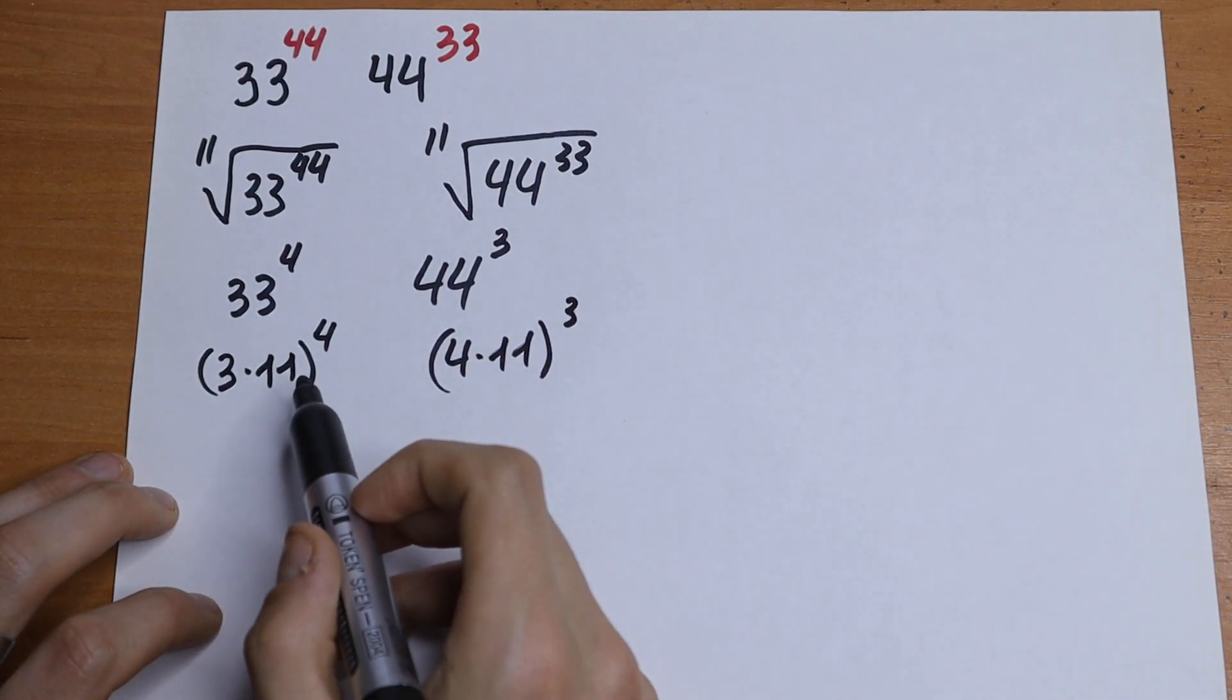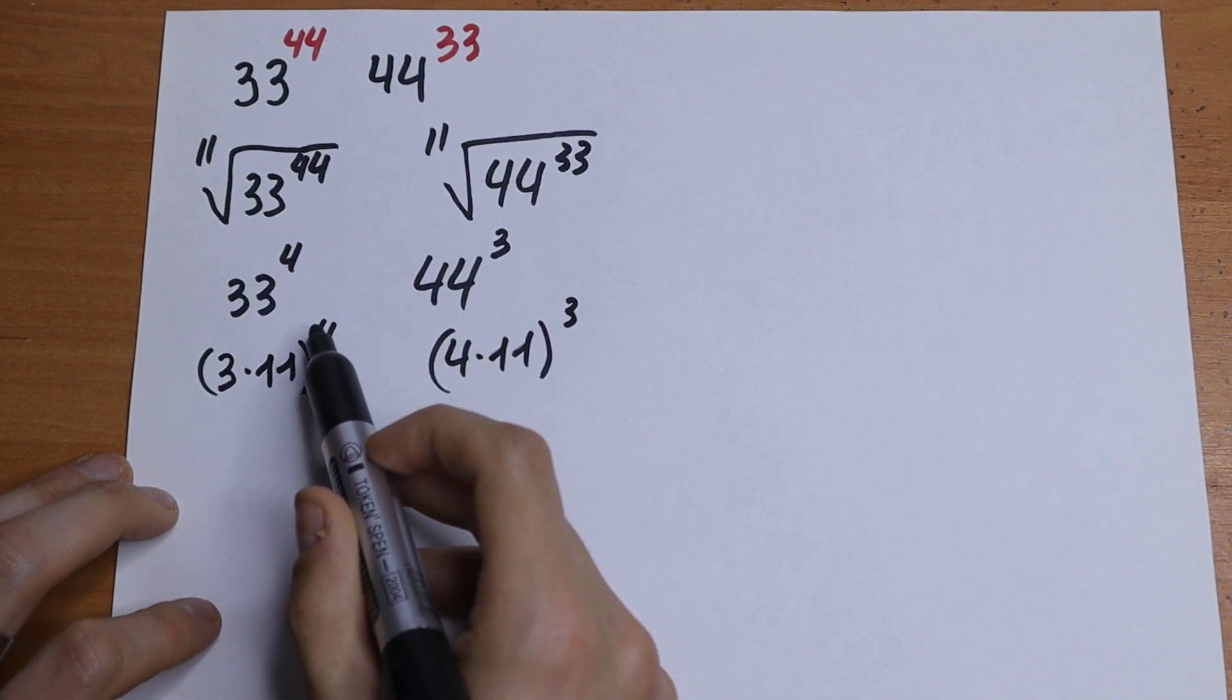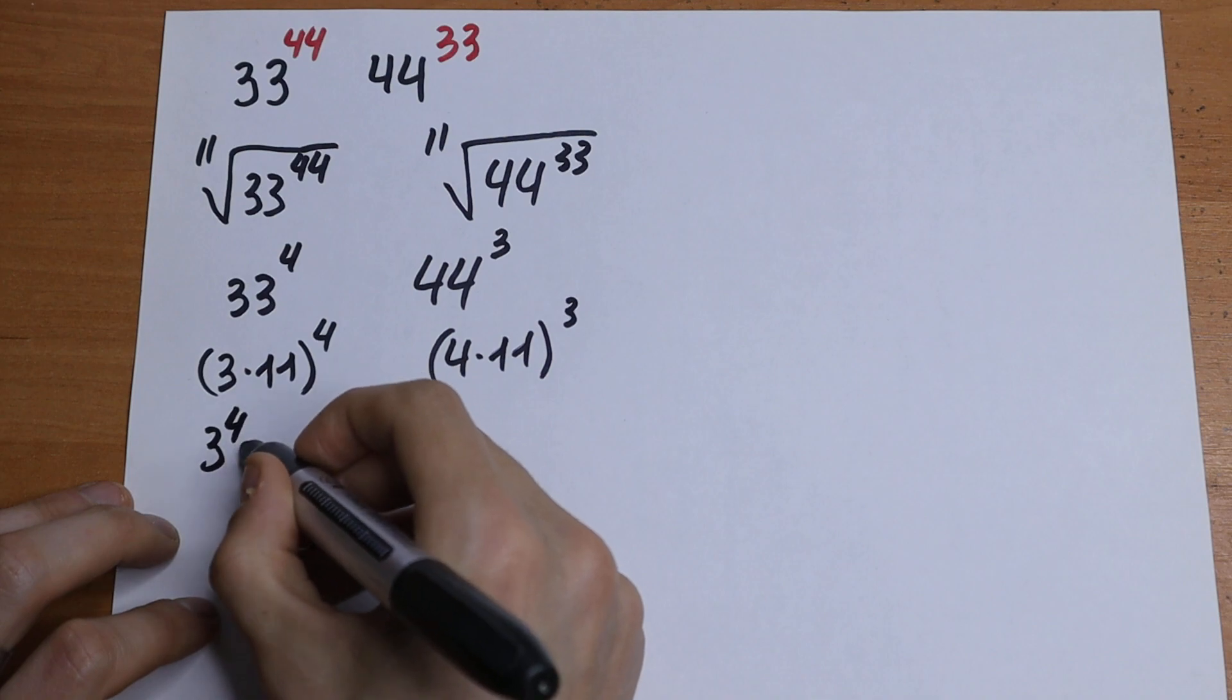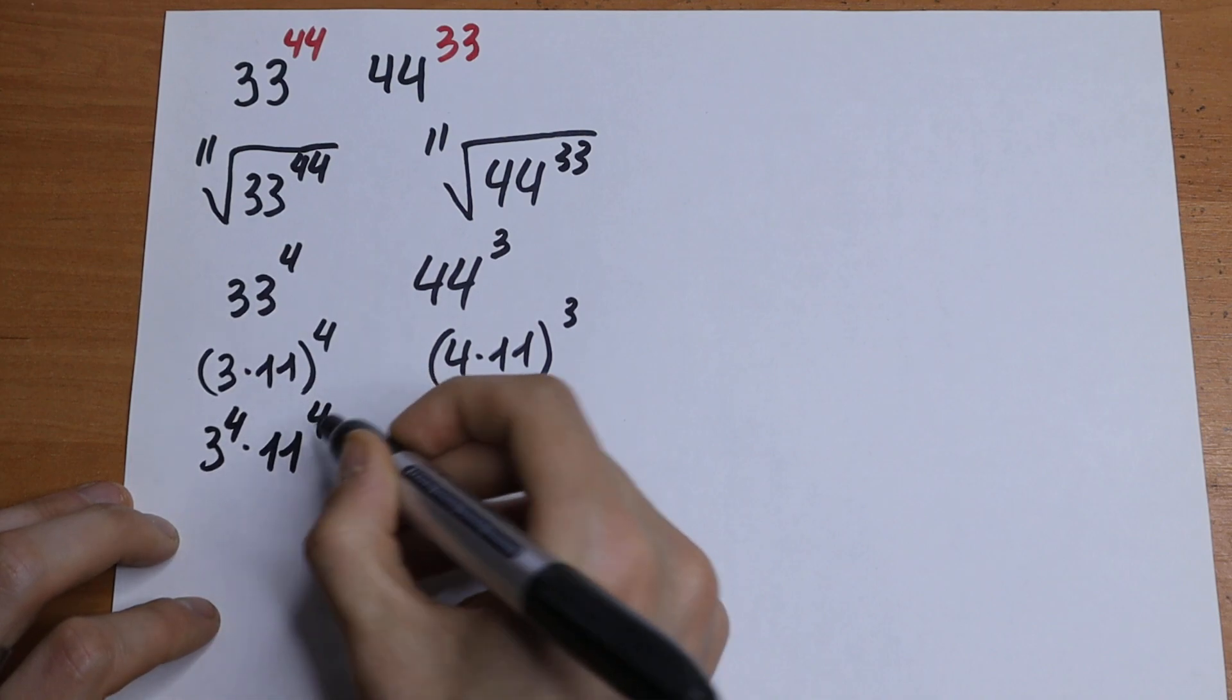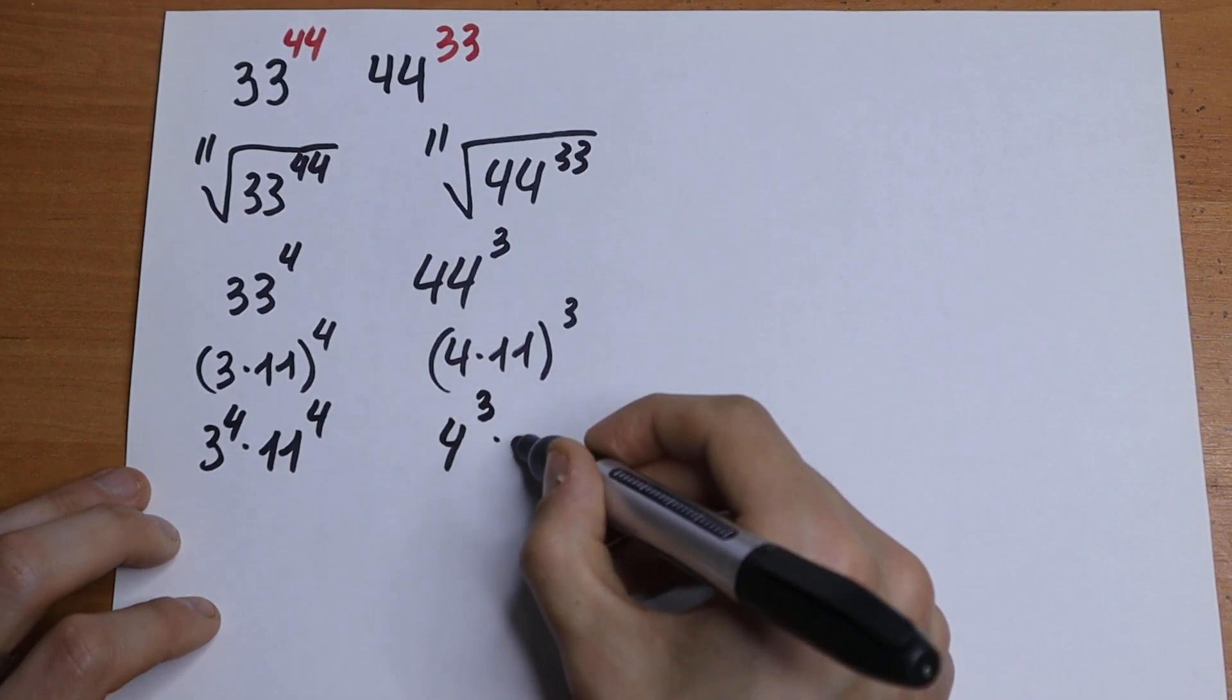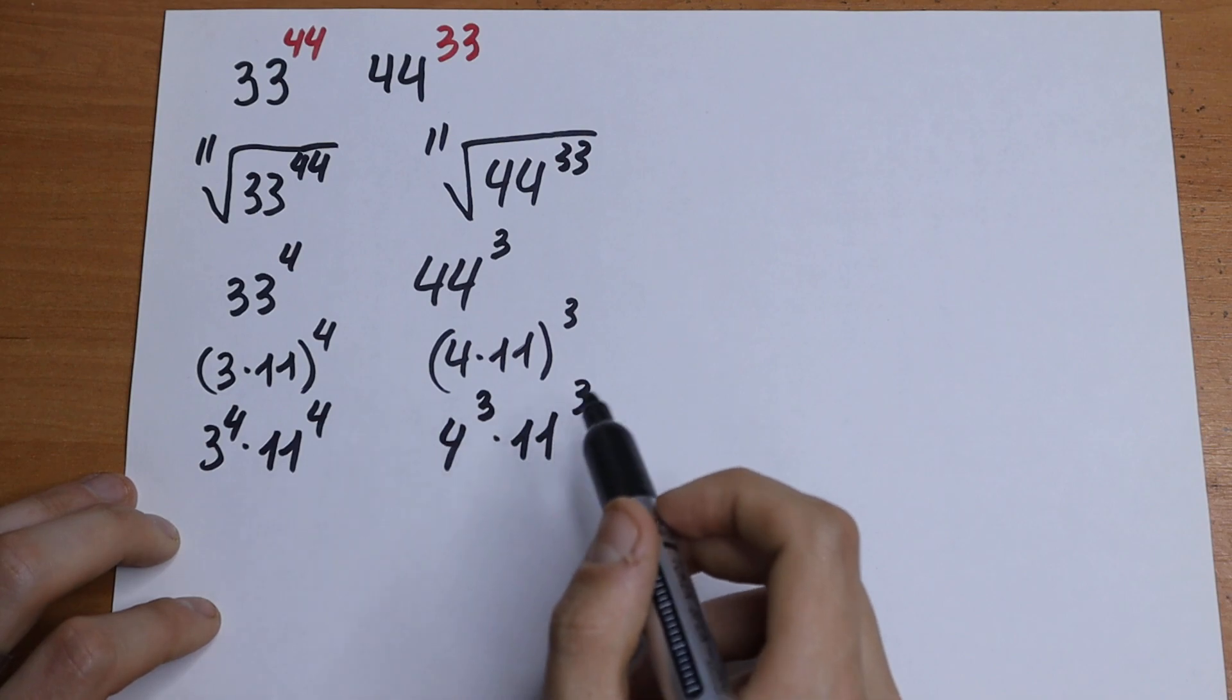If we have different bases but same exponents, if we have a product raised to the same power, we can write it as 3 to the 4th power times 11 to the 4th power. And on the right we will have 4 to the 3rd power times 11 to the 3rd power.